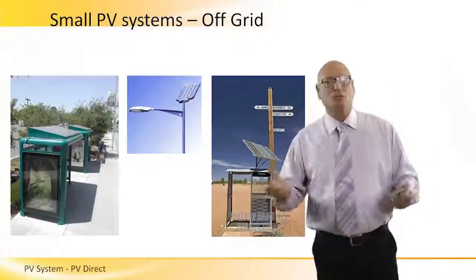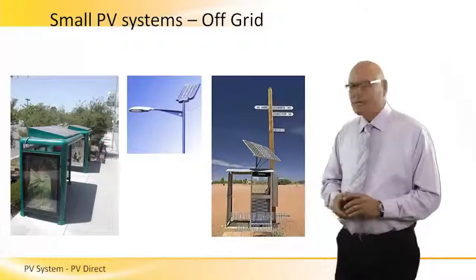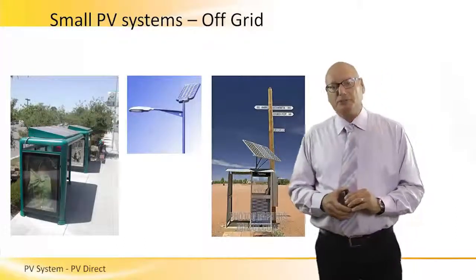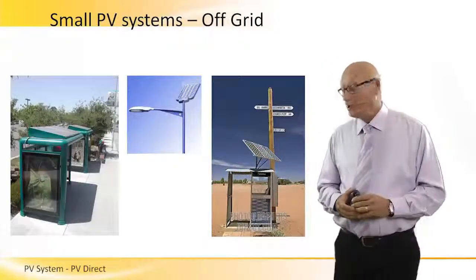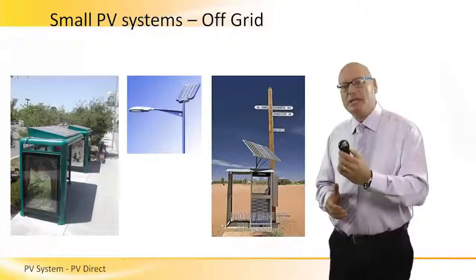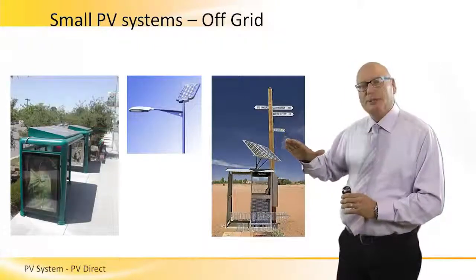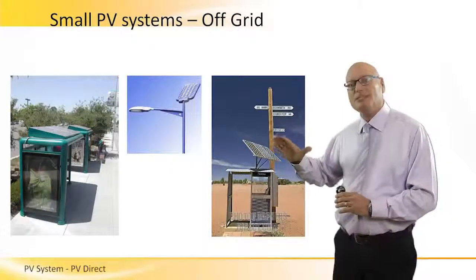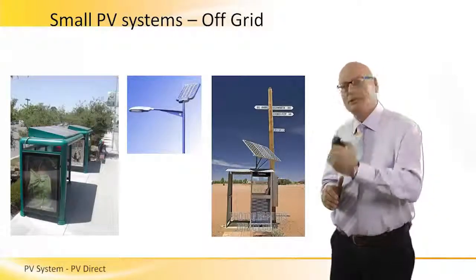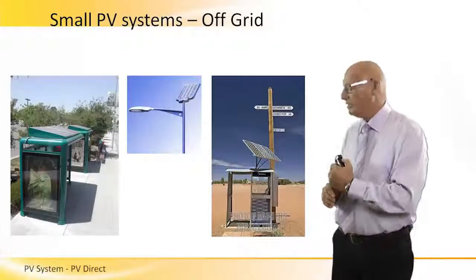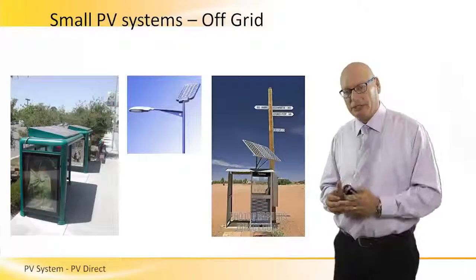Another example — several examples of small PV systems, and they are standalone, off-grid. On the left, there's a bus stop. Look at the shadow — look where the sun is. The position of the sun is behind the PV array, meaning the angle of the PV array is basically on the other side of the sun. So the beams coming from behind hit the PV array at a very low angle, meaning less energy, less solar energy, less irradiance will be received by the panel.